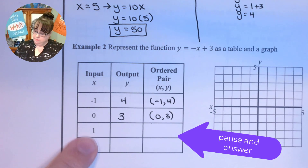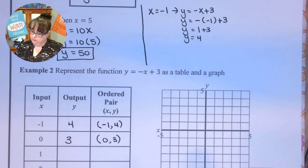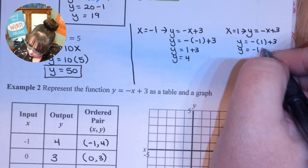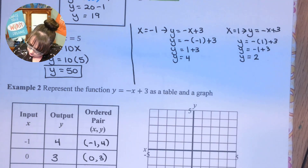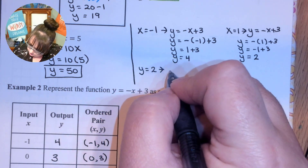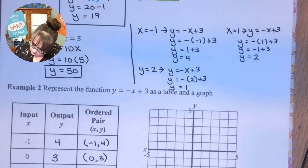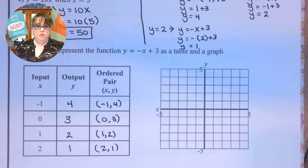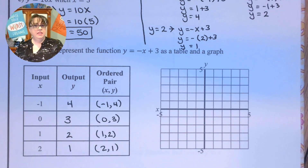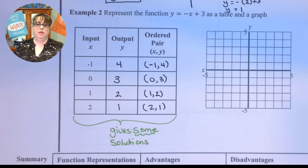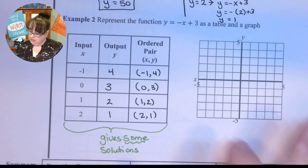When x is equal to 1, go ahead and pause the video, do these two, and then come on back. So there are some of our answers — you probably saw 4, 3, 2, 1. I could probably start using a pattern now to find more. The table does have some limitations: it is only going to give me some of my answers. For example, I don't know the answer when the input is 1.5 — I'd have to go and do the calculation to find it.